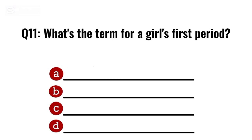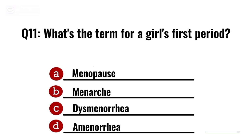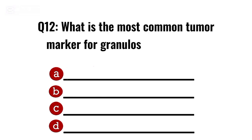Question 11. What is the term for a girl's first period? Correct option B: Menarche.